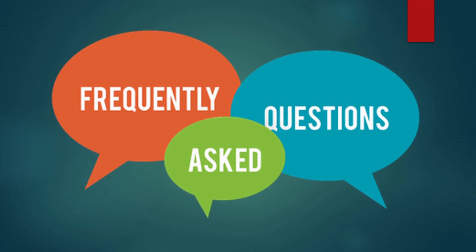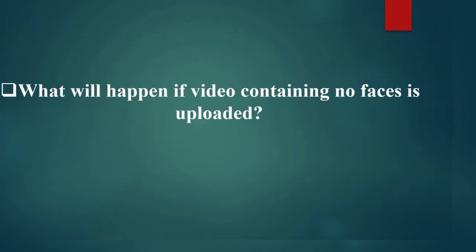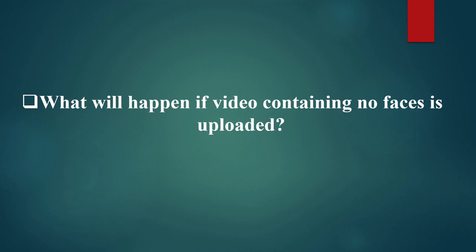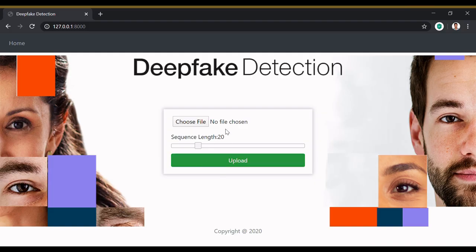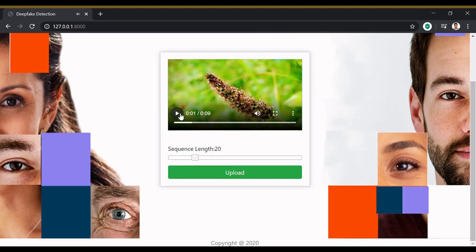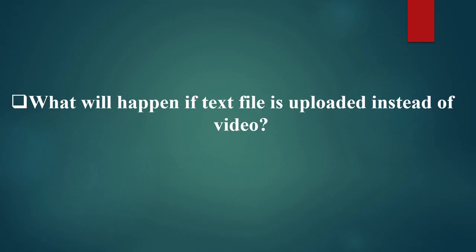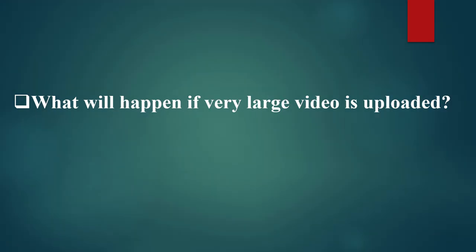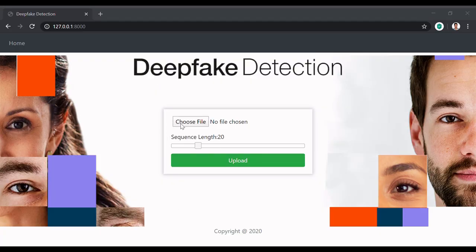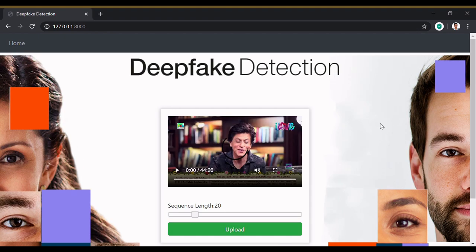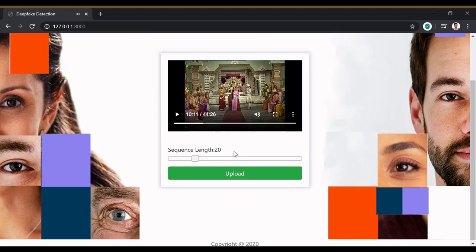It's time for frequently asked questions. What happens if a video containing no faces is uploaded? The model will not process the video and will return an exception saying 'no face found, unable to process.' What happens if a text file is uploaded instead of a video? Since our Django deepfake application has good input validation, it will only allow video files to be uploaded. What happens if a very large video is uploaded? The application only allows videos up to 100 MB; videos larger than that cannot be uploaded.